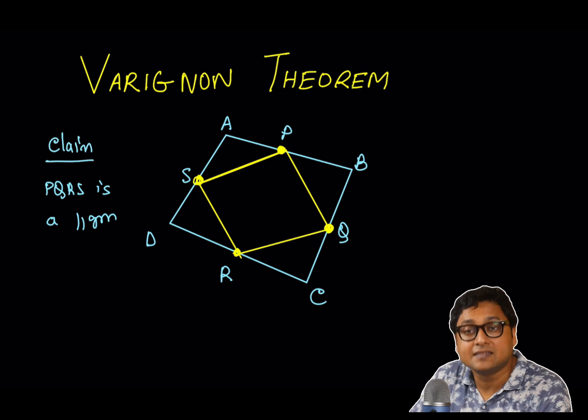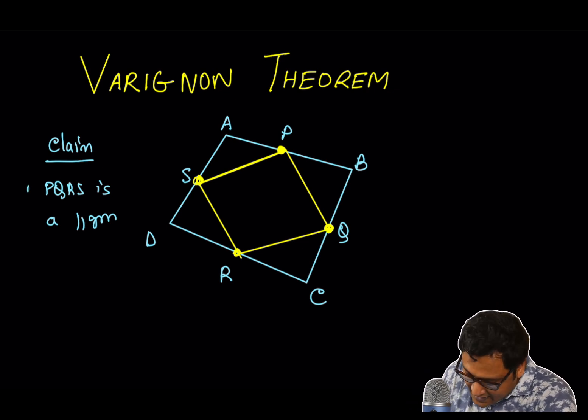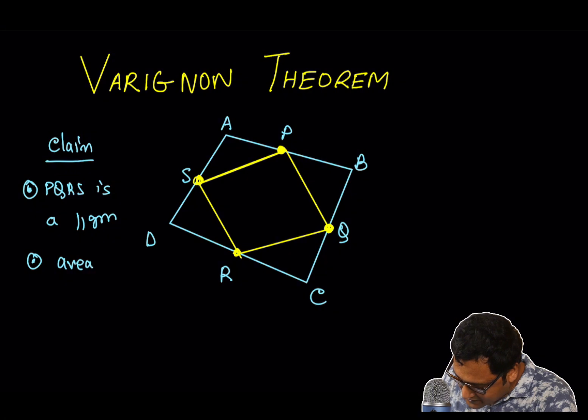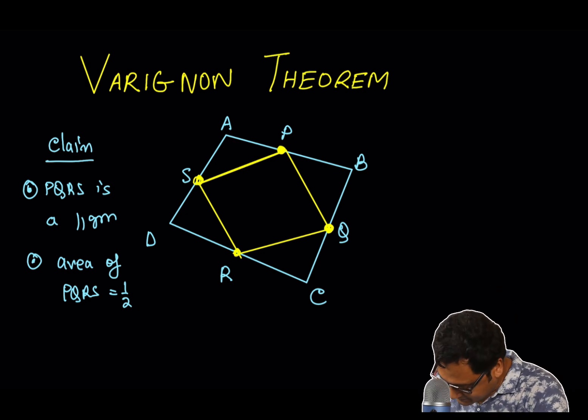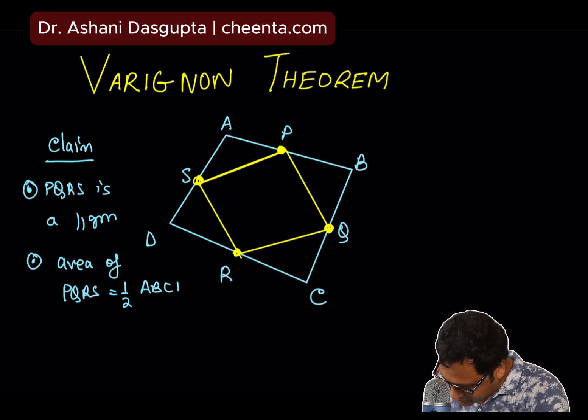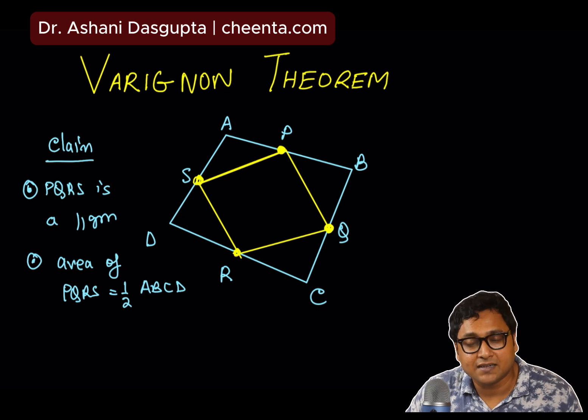That's the first claim. The second claim is that the area of PQRS is half of the area of ABCD. So, how do we go about it?